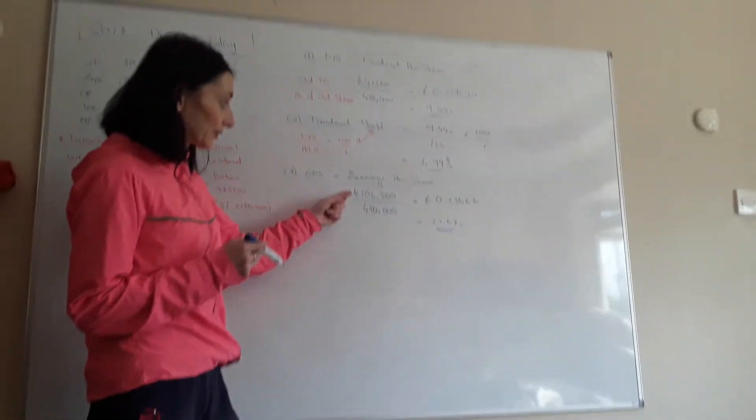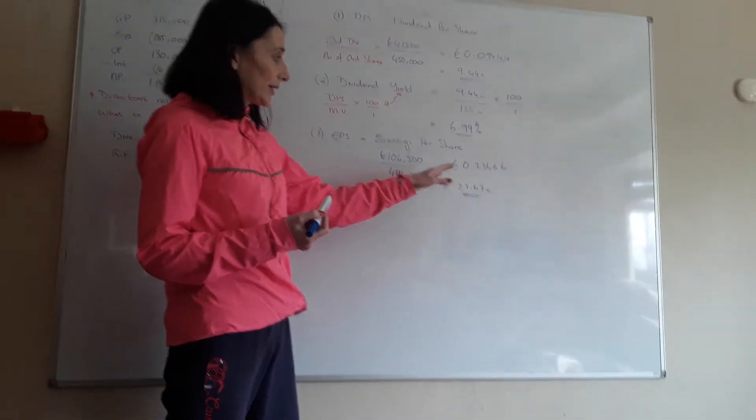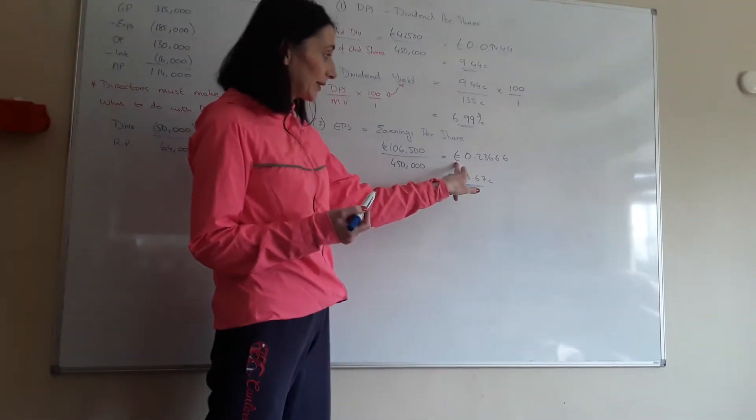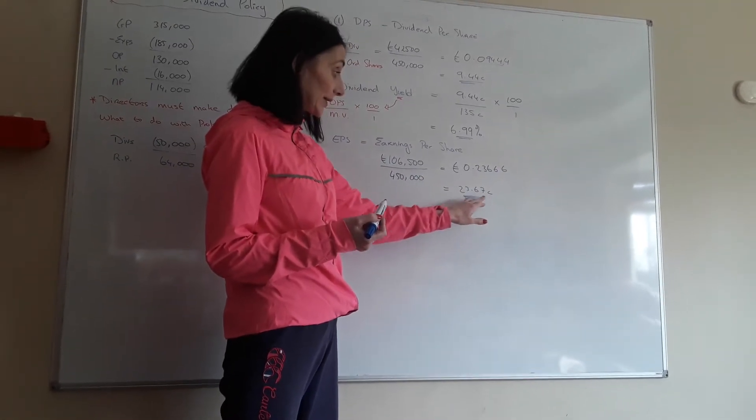So you have 106,500 to share out between 40 and 50% shares of people. So again, remember you're dividing two years, keep this at zero. Give me a good few places of decimals because I need two places at the end.